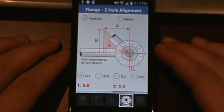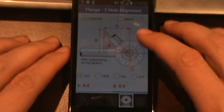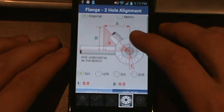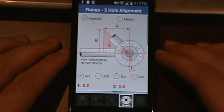But today we're just going to cover the functionality of this screen here. The reason for this screen is to help you determine the angle to roll your flange when you're fabricating in the bench, in order to give you a proper two hole alignment in the field.